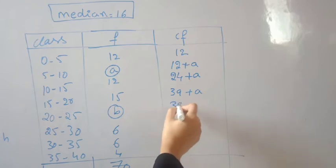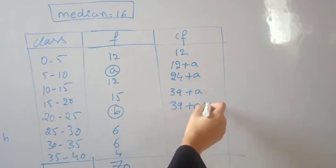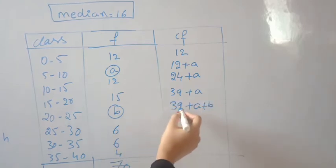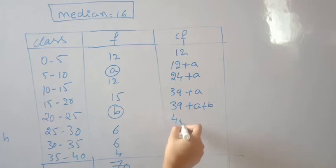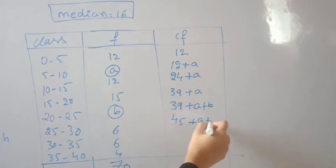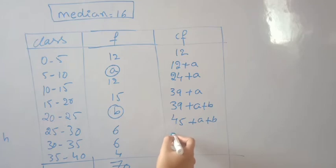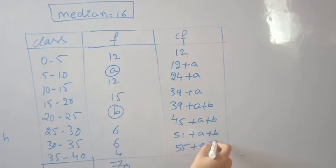Continuing: 39+A+B, then 39+6 = 45+A+B, then 45+6 = 51+A+B, then 51+4 = 55+A+B. The last line of cf equals the total frequency.